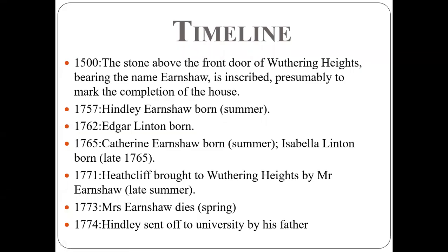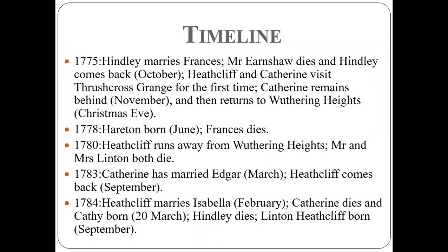In the previous video lecture on Wuthering Heights, we had discussed primary details about the novel — the identification of the characters, the point of view from whose perspective the novel is being read, and so on. I also gave you a timeline to help understand the complex plot, and yesterday we discussed character identification again, along with a family tree to help you remember the complex characterization. I am now moving on to the new slides for today.